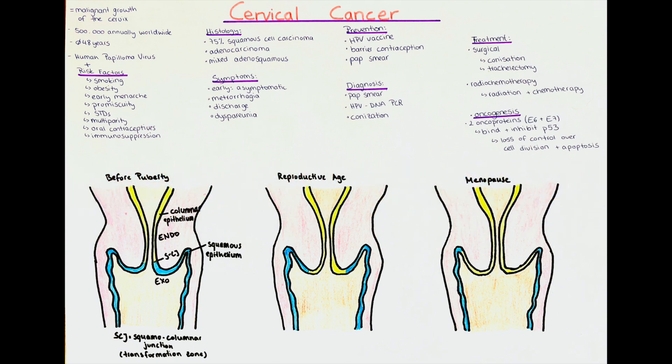Cervical cancer is a malignant growth of the cervix. Worldwide, around 500,000 women are diagnosed, which makes it the fourth most common cancer in women and the second most common gynecological malignancy. The average age of diagnosis is 48 years.